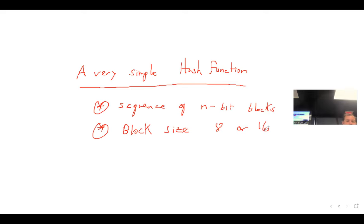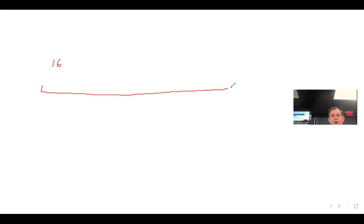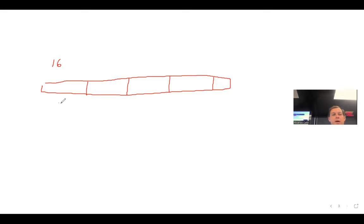The message is processed one block at a time in an iterative fashion to produce an n-bit hash code. So let's say you select 16 - you have a message and you're going to break it up into blocks of size 16, and maybe the last one will require padding. So at this point you have block 0, block 1, block 2, block 3, and finally block 4 which needs to be padded.